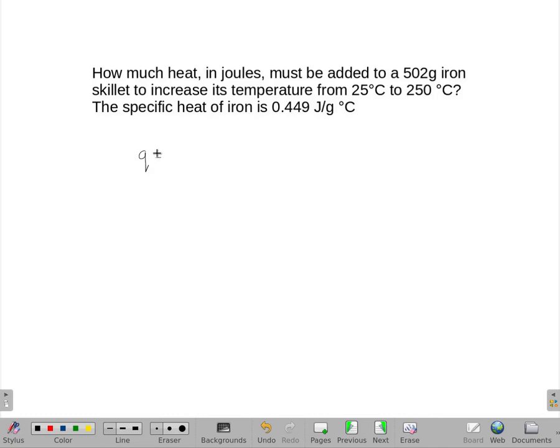We are just doing our standard equation, we're just going to plug some stuff in, so we're going to end up solving for Q. We have a specific heat of 0.449 joules per gram degree Celsius, we have a mass of 502, and we have a change in temperature of 25 to 250.